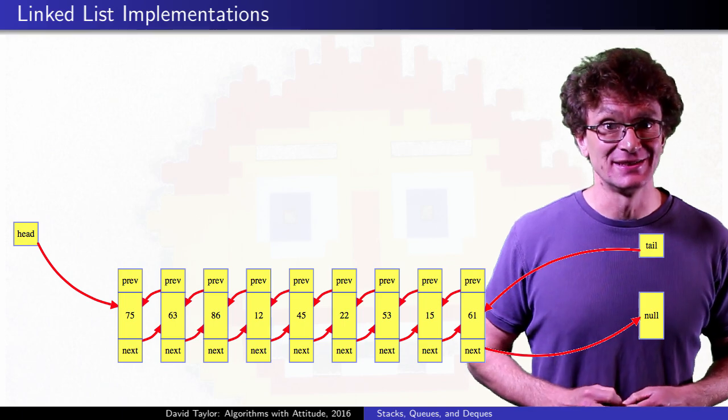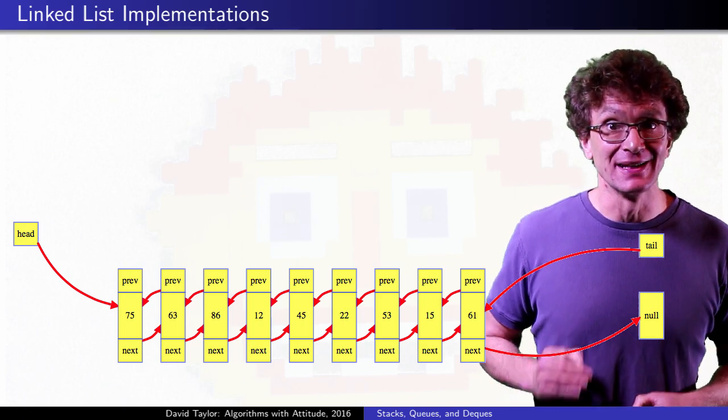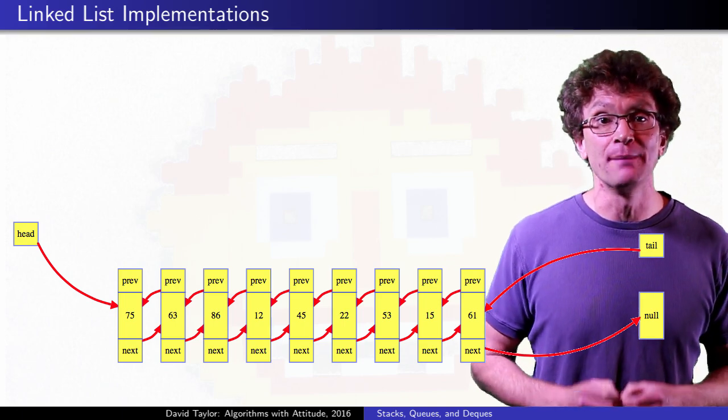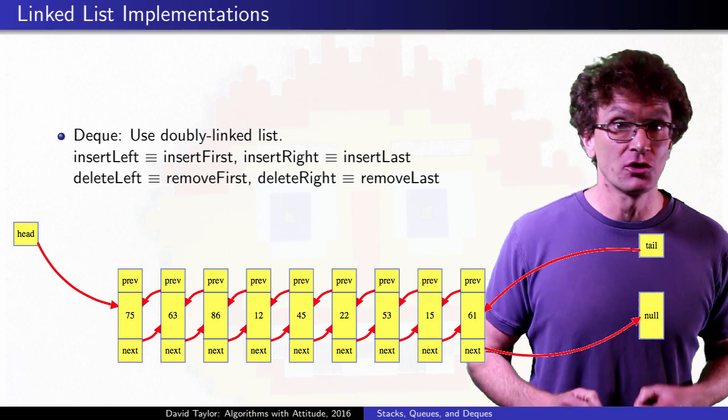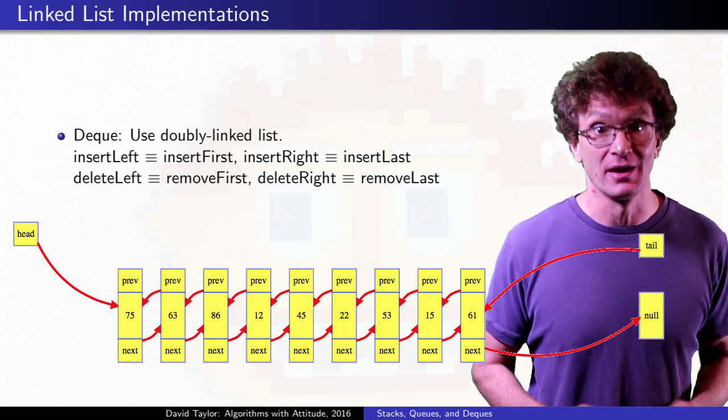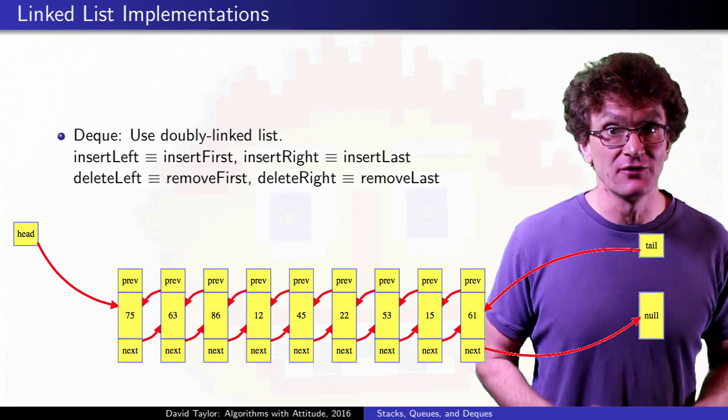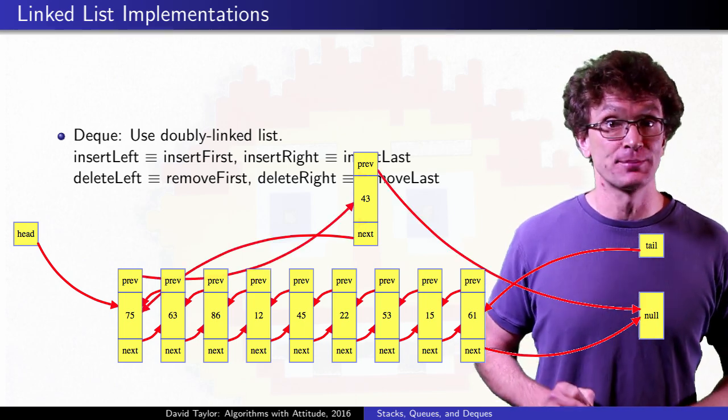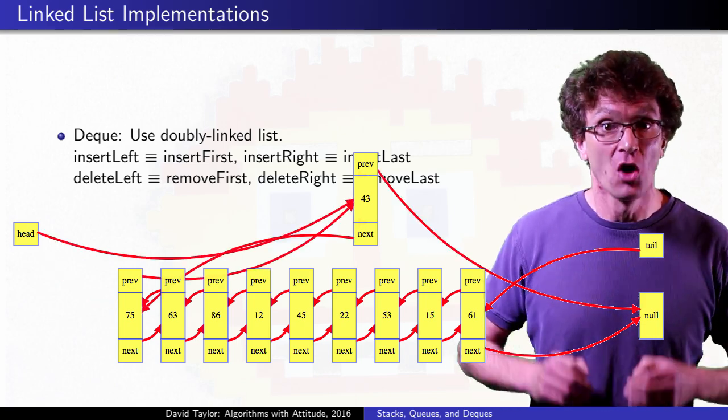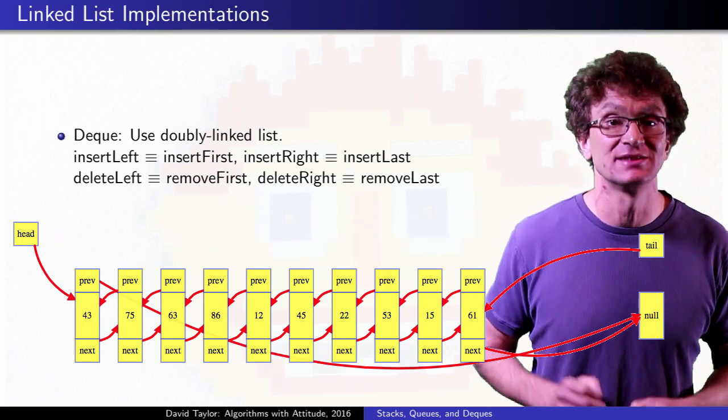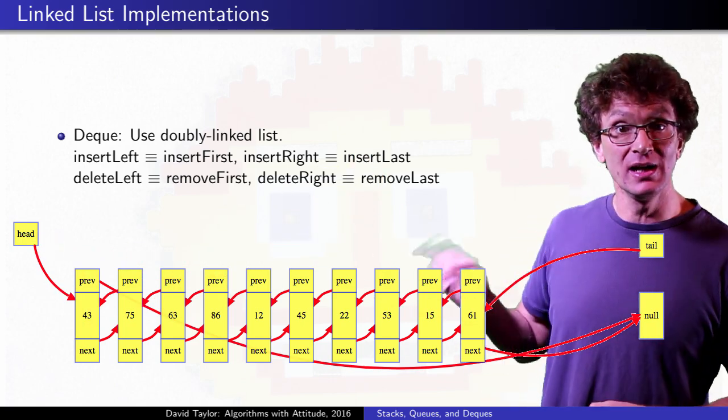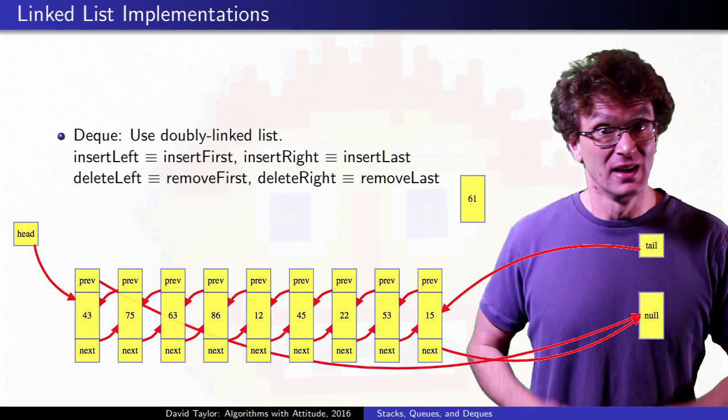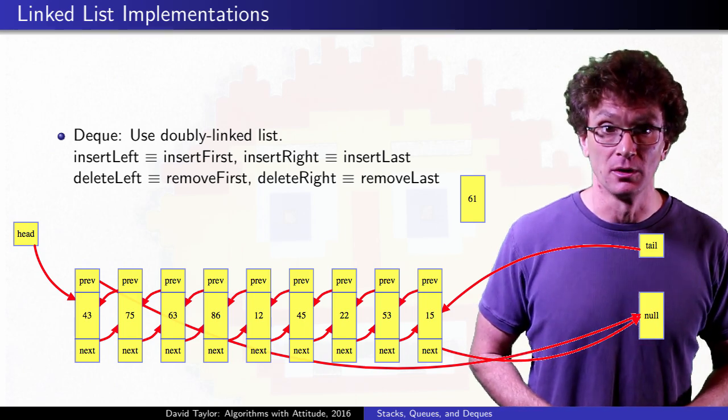Starting with a linked list implementation, doubly linked lists give a really easy way to implement deques. We can insert or delete from the head position, call that the left, and insert or delete from the tail position, call that the right, done. Even with the optional size and peek operations, all operations take constant time. The animation here showed insert left and delete right, the other two operations are similar.